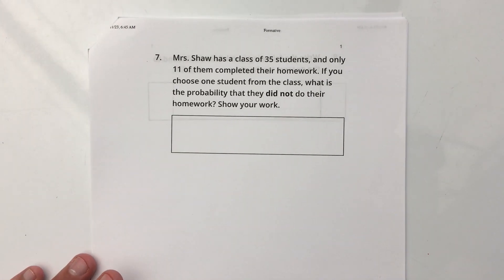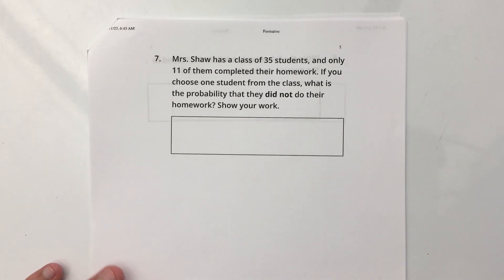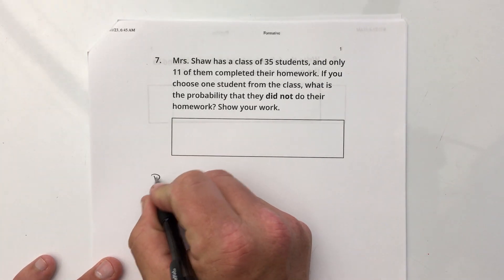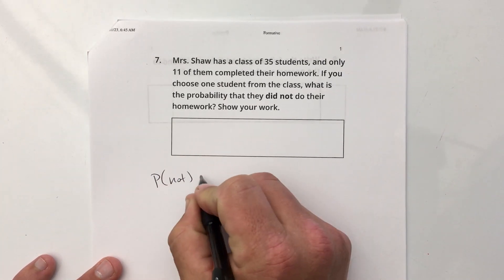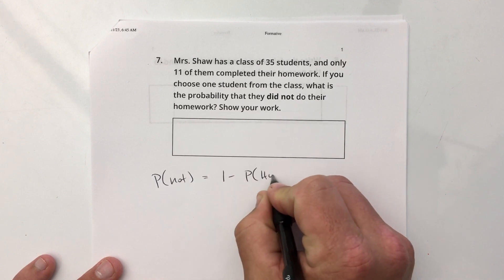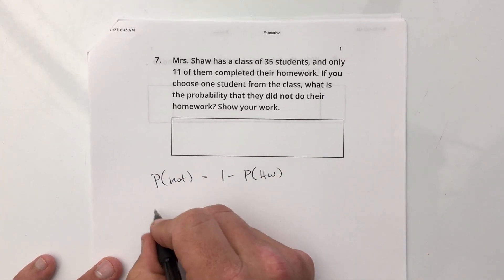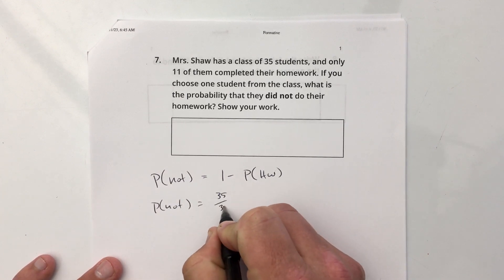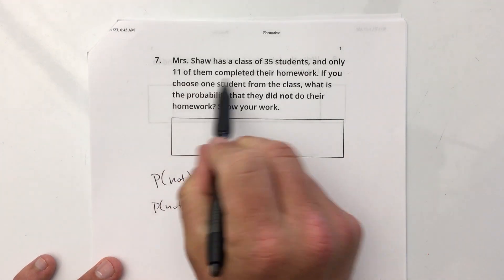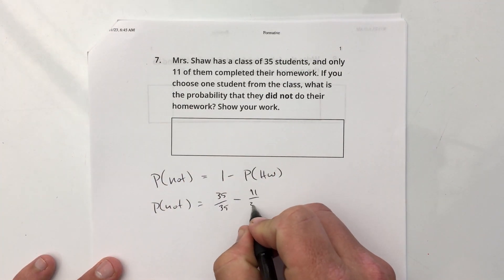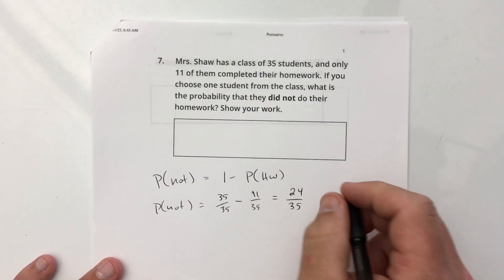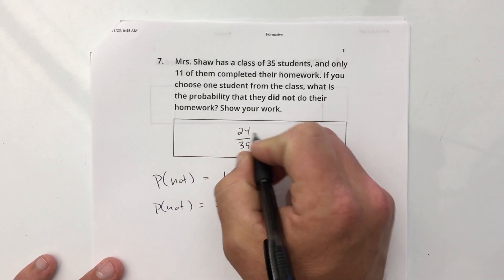Mrs. Shaw has a class of 35 students, and only 11 of them completed their homework. If you choose one student from the class, what is the probability they did not do their homework? Well, remember, the probability of not equals one minus probability they did their homework. So probability of not is 35/35, which is 1, minus 11 of them completed, 11/35. So that is going to be 24/35.